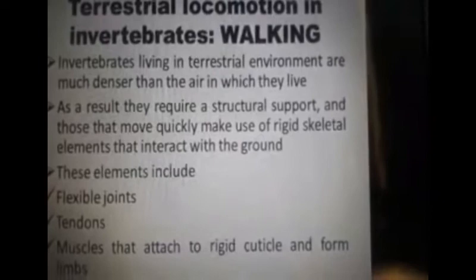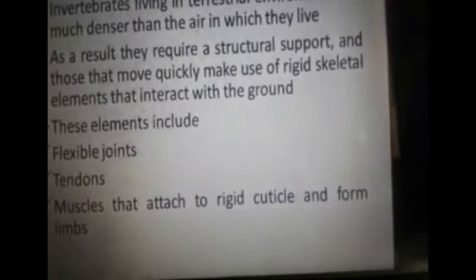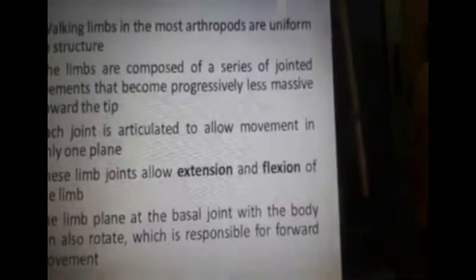Terrestrial locomotion in invertebrates: walking. Invertebrates living in a terrestrial environment are much denser than the air in which they live. As a result, they require structural support and they move quickly through rigid skeletal elements on the ground. These elements include structural elements having flexible joints, tendons, and muscles which help in attachment to the rigid elements of a jointed cuticle to form limbs.